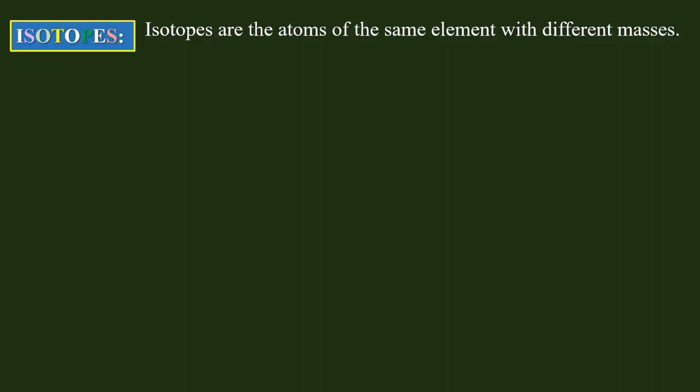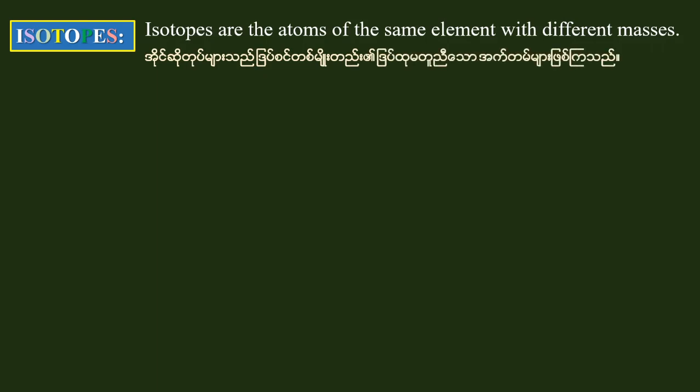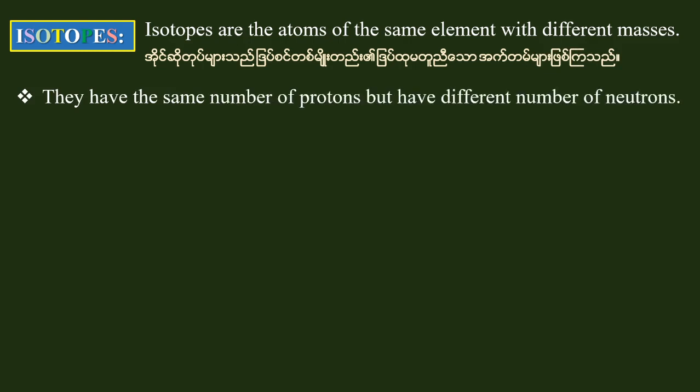Isotopes are the atoms of the same element with different masses. What you have about the system is there is a number of protons and a number of neutrons. If you have the same number of protons but have different numbers of neutrons.